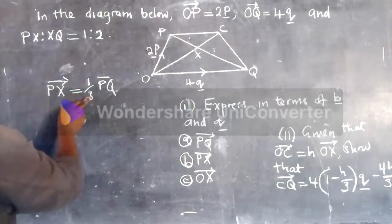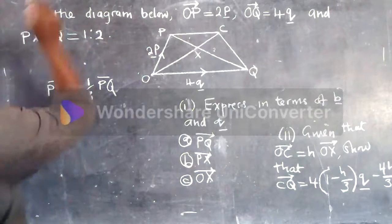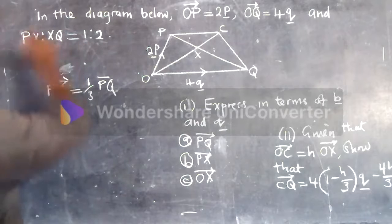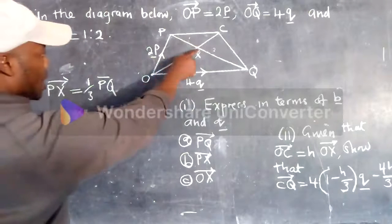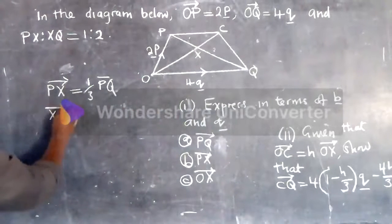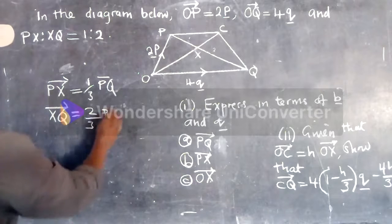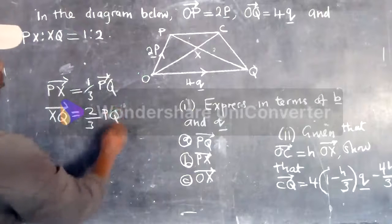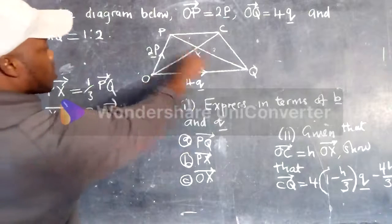So where is this three coming from? It's from the addition of one and two. You get three. And the one there, you put it on top. So what if you want to find the vector xq? xq would be equal to two-third of pq. So two-third of pq.